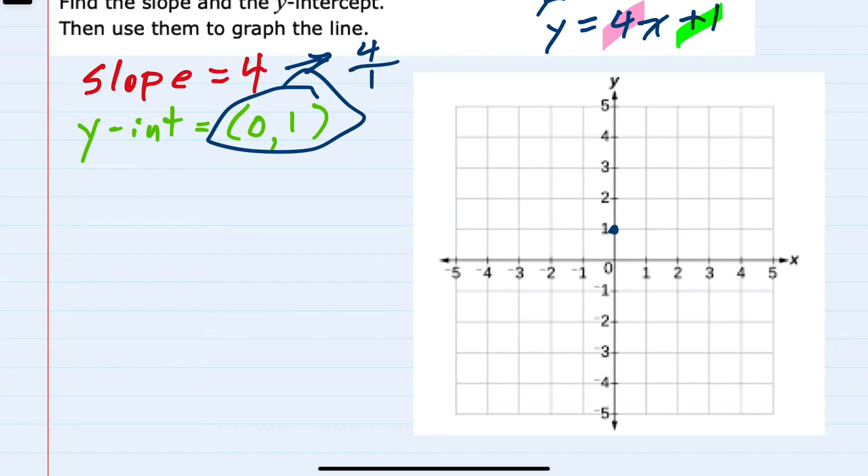So from our y-intercept, we would go up 4 and over 1, since the slope is rise over run. Then connecting these two points gives me the graph of the line. Thank you.